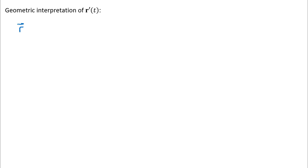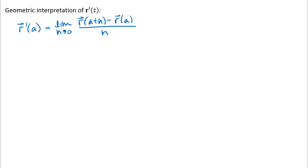In this video we're going to look at interpreting the derivative of a vector-valued function. The first thing I'm going to do is write down the definition of the derivative — specifically at a particular value of t, so r prime of a. You should be able to write this down from memory, which shouldn't be too much of a stretch if you remember the definition of the derivative from Calculus 1 for an ordinary real-valued function.